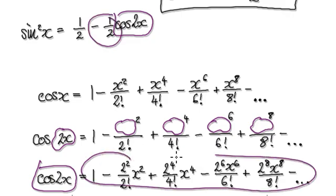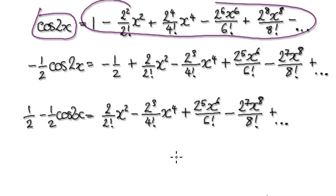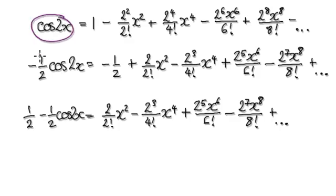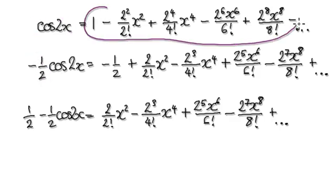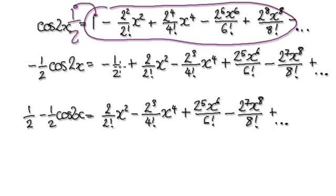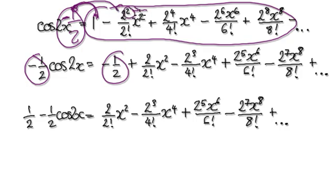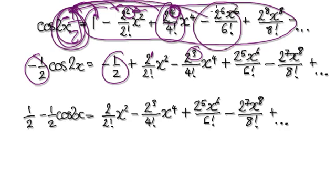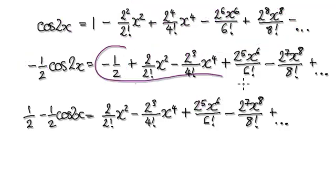So this is our series. We need to times this whole thing here by negative a half. So negative a half times one would give you this. Negative a half times this — so you take away one on the index — that would be this. And then negative a half times this, that would be two to the power of three. And negative a half times this thing here, so that would be two to the power of five, and so on. So that would then give us this.